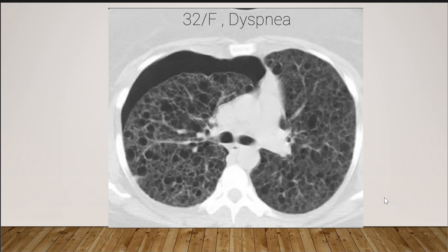This is a new case discussion. The patient has dyspnea, is female, and about 32 years old. In this case, we have multiple cysts involving both lungs, and also one of the cysts has ruptured, causing right-sided pneumothorax.